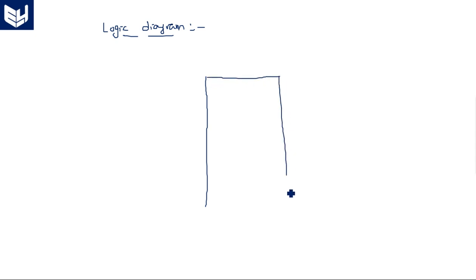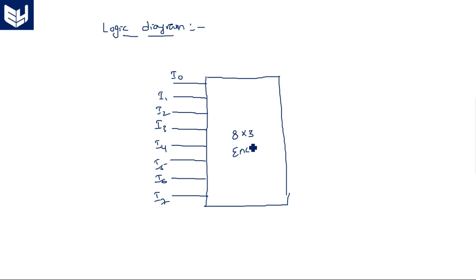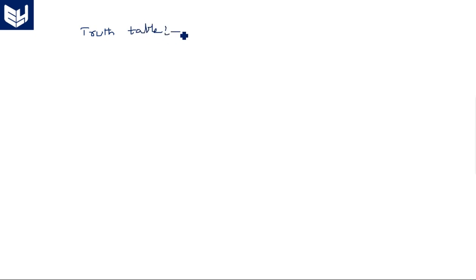The logic diagram of the 8 by 3 encoder: we should have 8 input lines and 3 output lines. The 8 input lines are I0, I1, I2, I3, I4, I5, I6, I7 — that is 0 to 7, total 8 inputs. For all logic diagrams, whatever you are taking — encoder or decoder — the size should be mentioned inside the IC so you can immediately understand what it is. The 3 outputs are Y2, Y1, Y0.